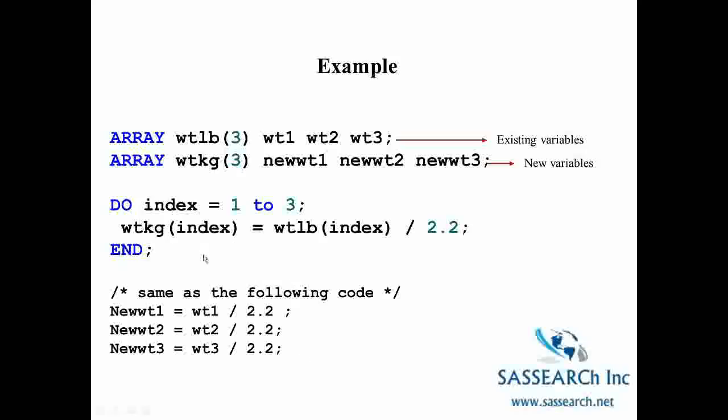So this do loop is replacing this code here. And again, if we had a hundred weights that we needed to recode, it would be much more efficient to do that recoding using arrays and the do-end loop.